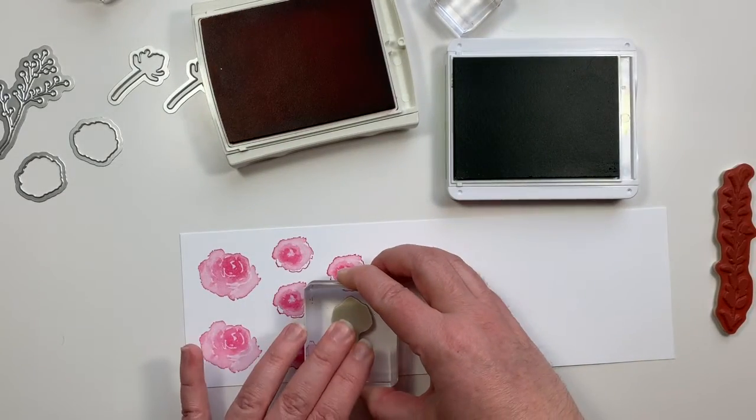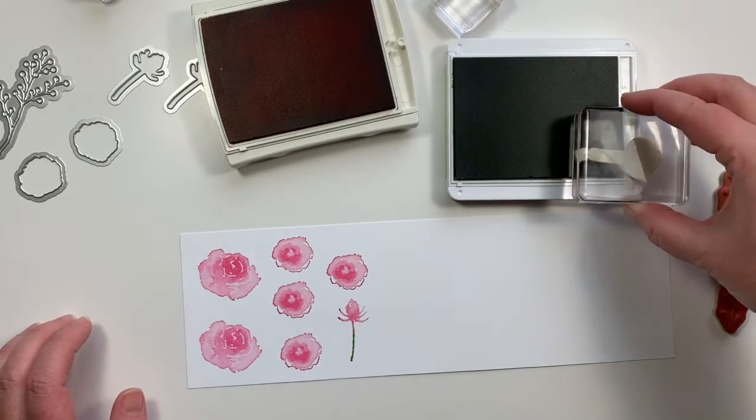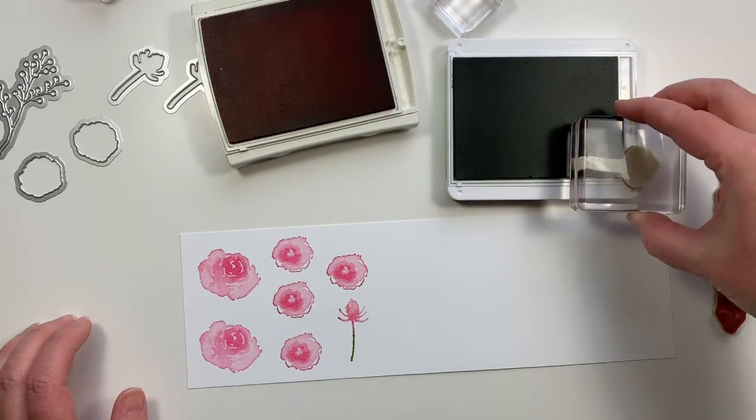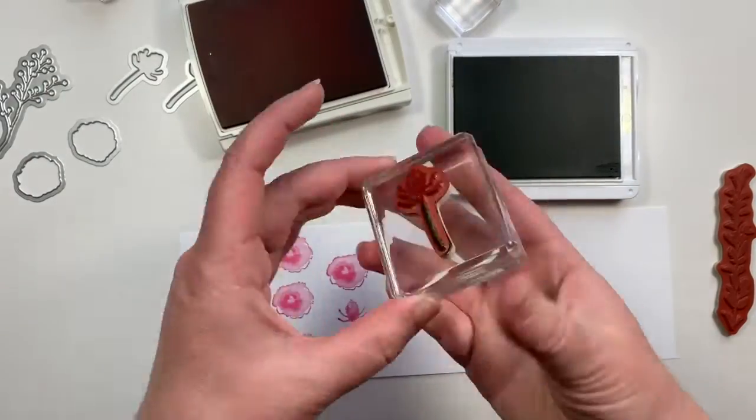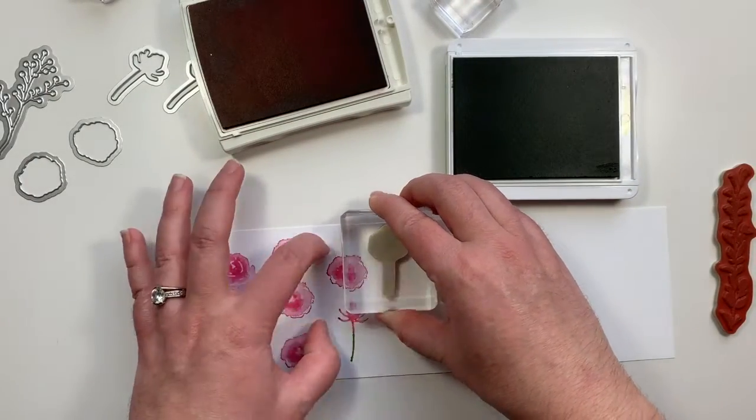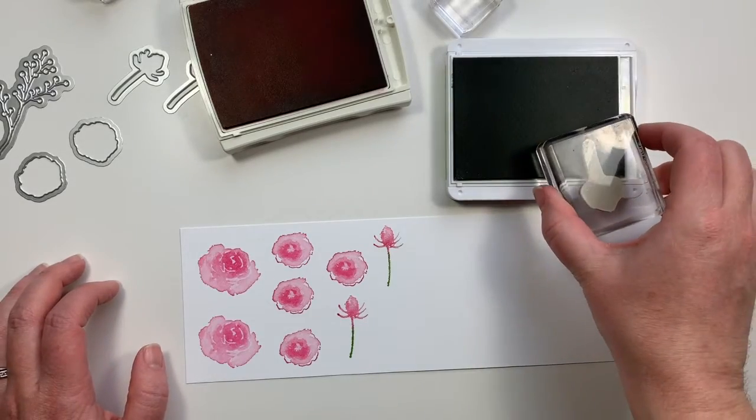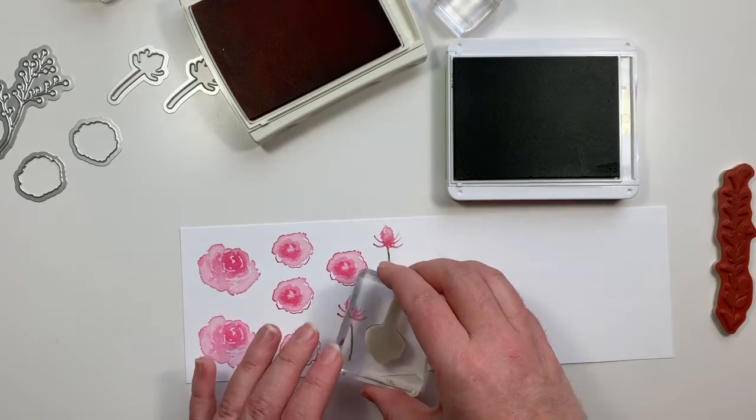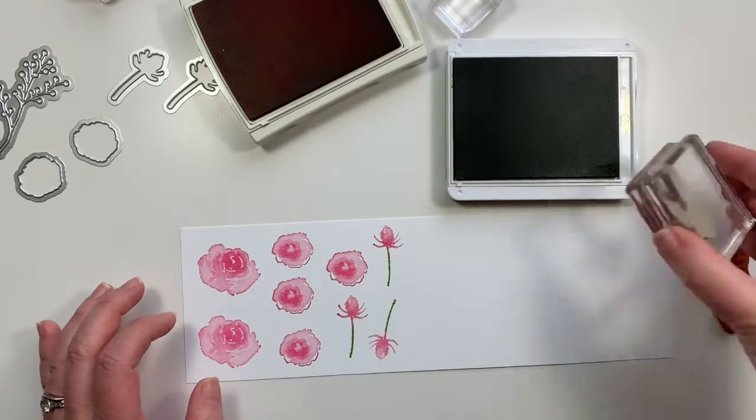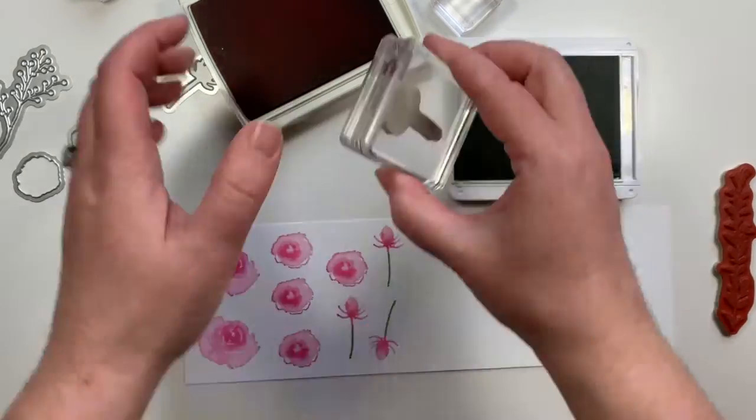This is an alternate method if you don't have any markers. You can go ahead and use this method to get that variegation on your stamps. You could also use a sponge dauber to do the same thing.